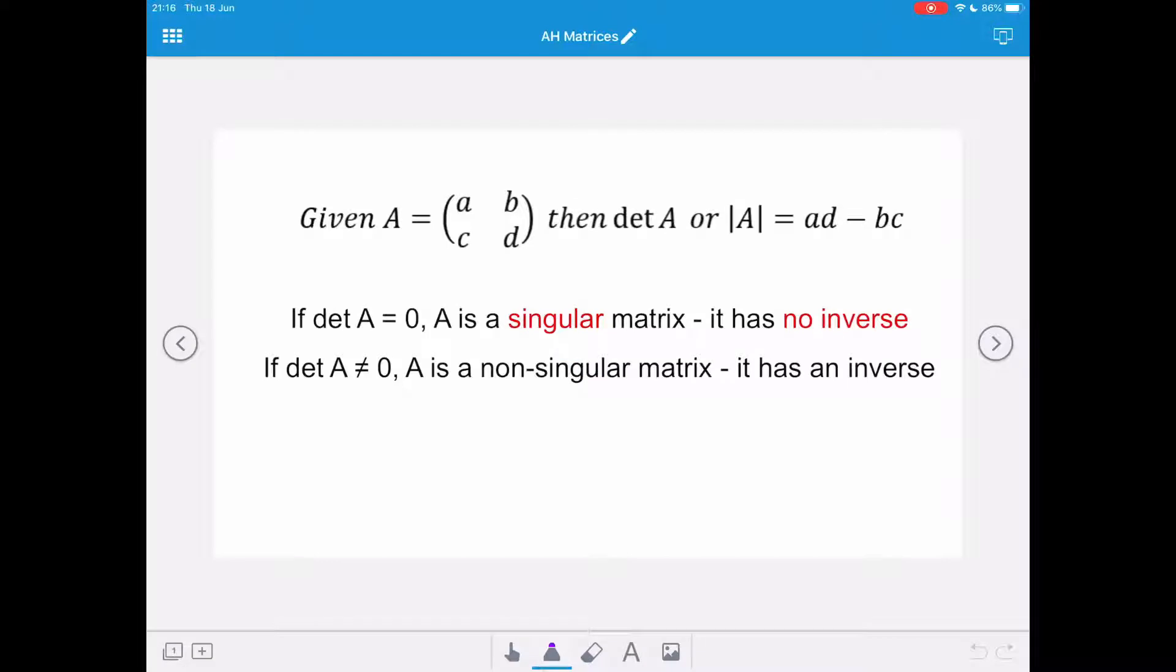So given the matrix A equals [a b; c d], then the determinant of A equals ad minus bc.